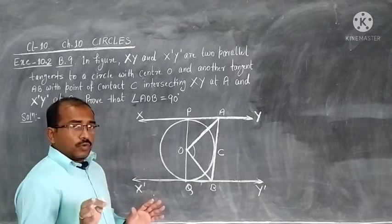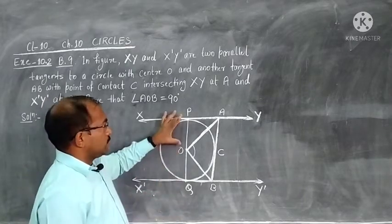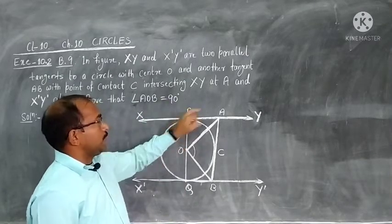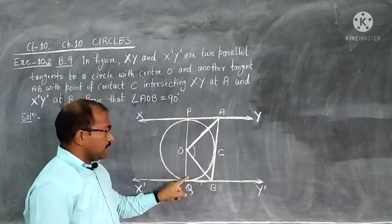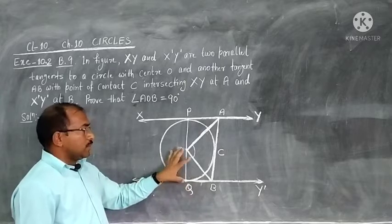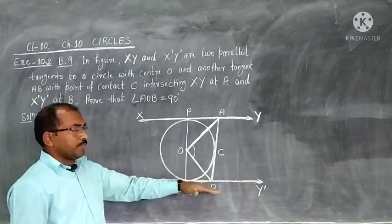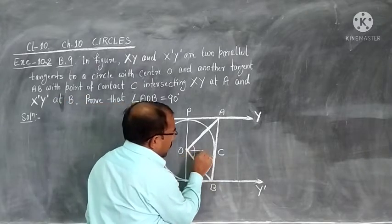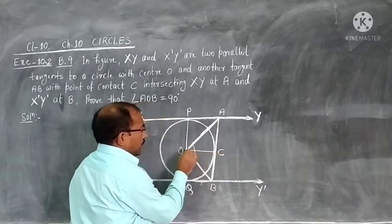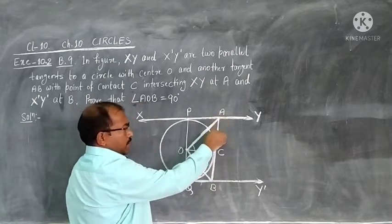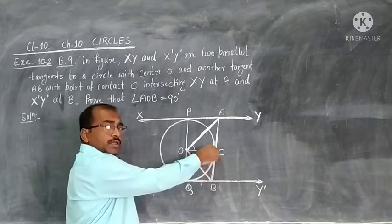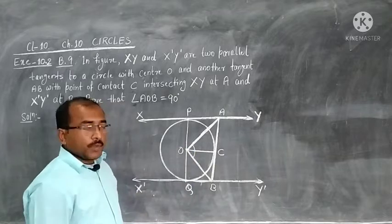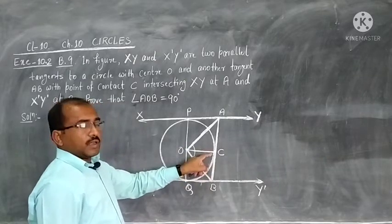We know that the radius and tangent are perpendicular to each other. So OP is perpendicular to XY, meaning angle OPA is 90 degrees. Similarly, angle OQB is 90 degrees because OQ is the radius and X'Y' is the tangent. We join the point of contact C to center O — OC is also a radius, so those angles are also 90 degrees.